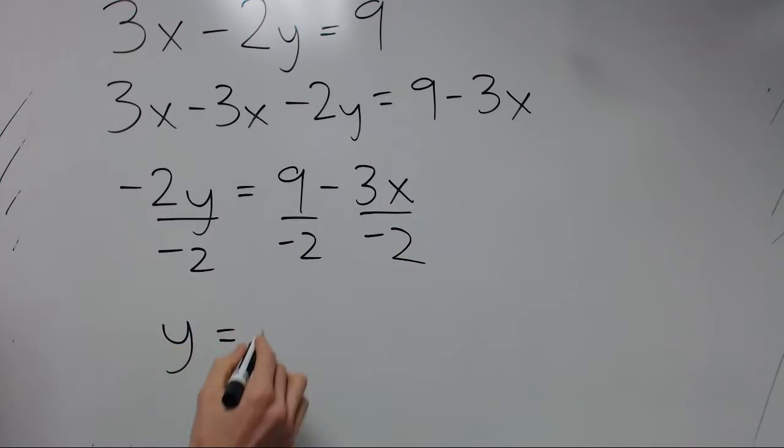Now we just need to divide everything by negative 2. And we get the slope-intercept form. And we put the x term first. It's positive 3 halves x. We don't really need the plus sign. And this is negative 9 halves.